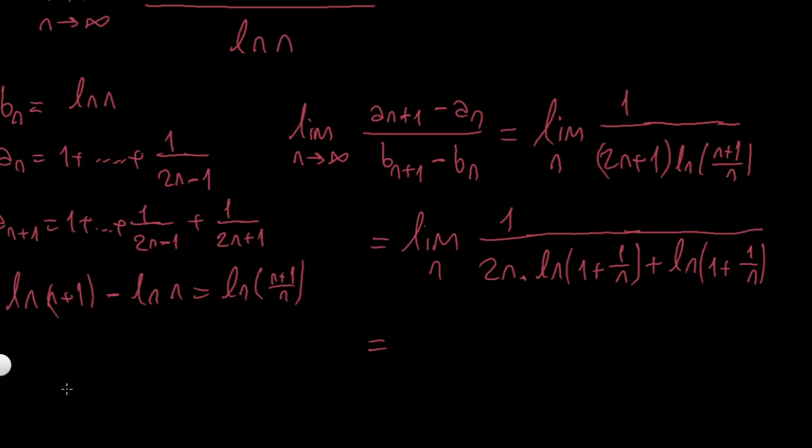but I know that limit, so this is a note, as n goes to infinity, (1 plus 1 over n) to the n will converge to just the number e, Euler's number.